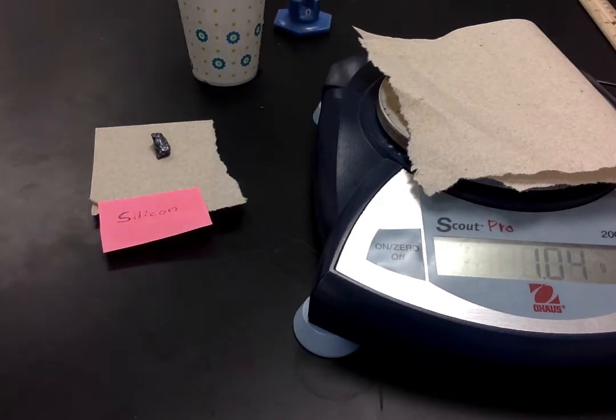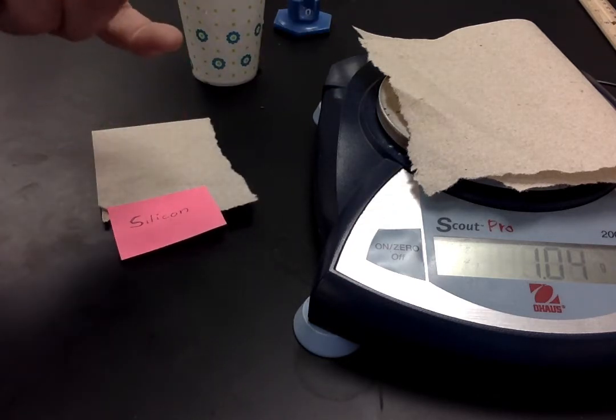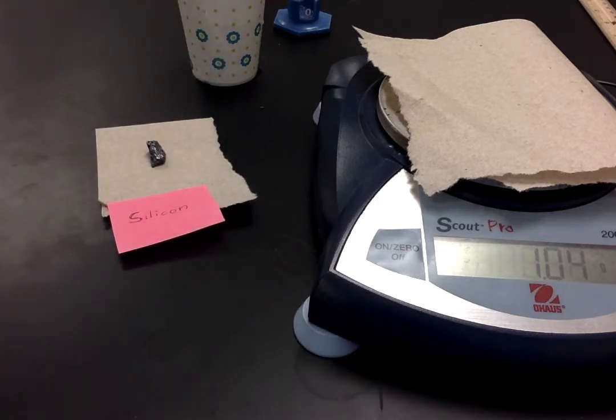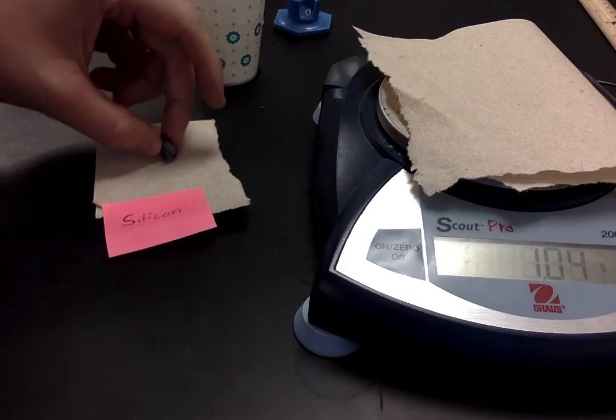First thing I want to try to do is determine the mass of that silicon. And so right now you see I've got a paper towel on there because you don't want to set this silicon just on the scale. It's never a good idea to do that with chemicals. You always want them in some sort of boat or paper towel or some sort of container to keep the element directly off the scale.